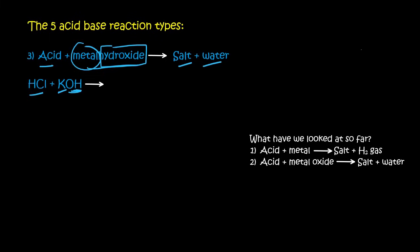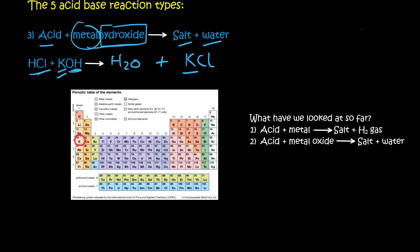Now the product should be a salt and water. So I always put the water first. And then what's left over? Well, we've got a K and we've got a Cl. So that's your salt. Remember, a salt is a metal and a non-metal. Now potassium, if you look on the periodic table, has a valency of plus one.